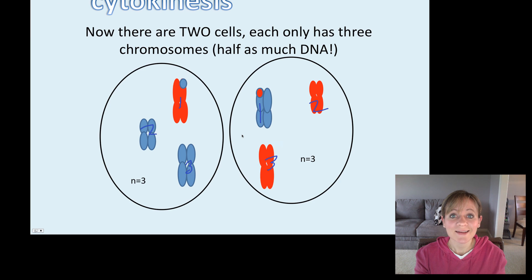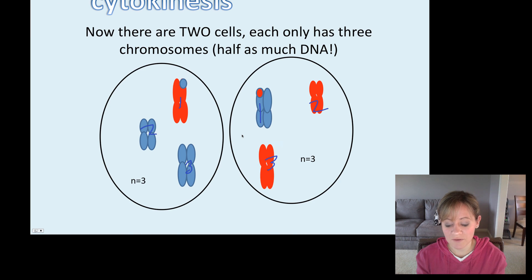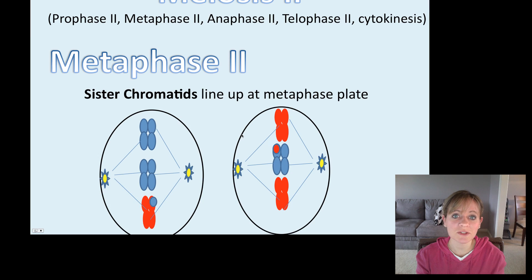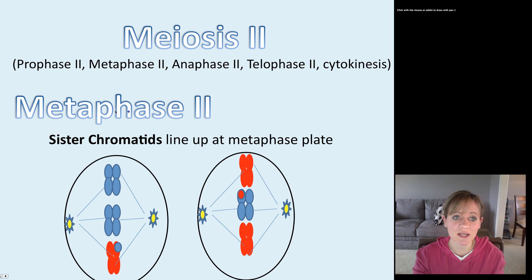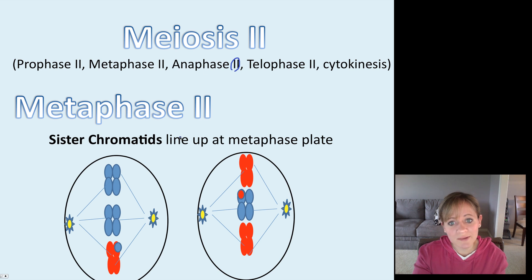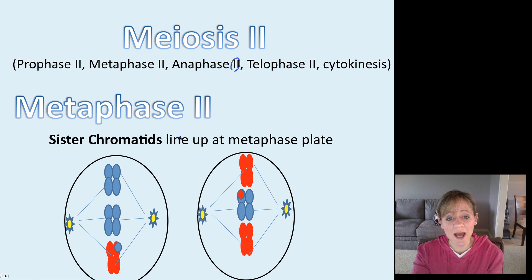Now we're going to focus in and see what happens to these cells during the second phase of meiosis. Meiosis II still consists of the same subphases — we just have a little two instead of a one. So prophase II — nothing too much is really happening there.